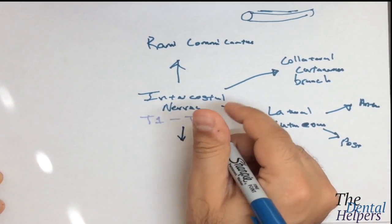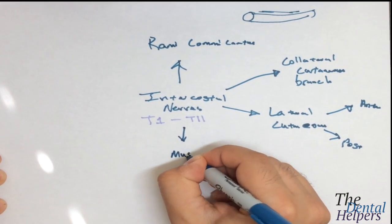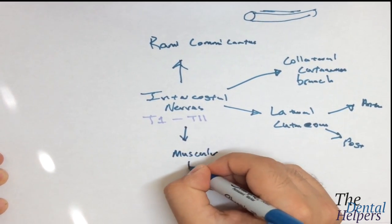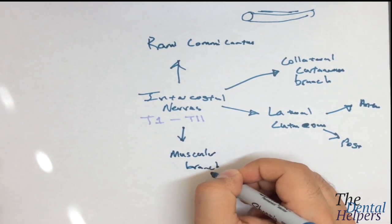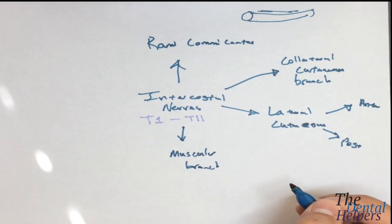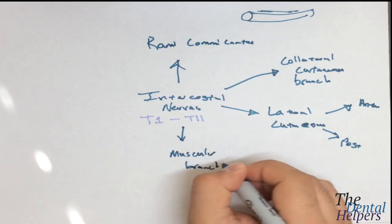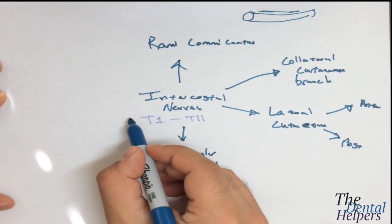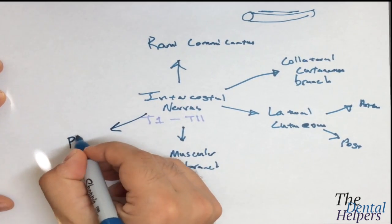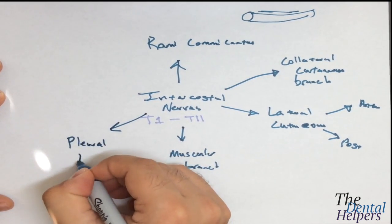Then we have the muscular branch, which innervates all the muscles of the intercostal space. Then we have the pleural branch.